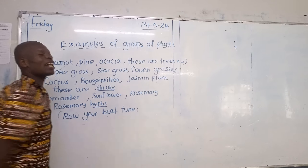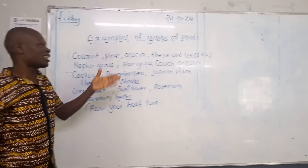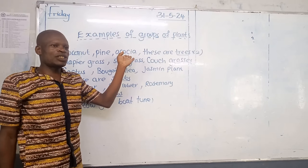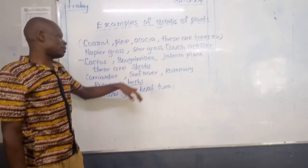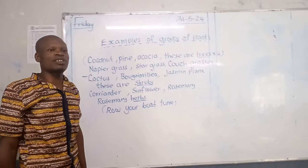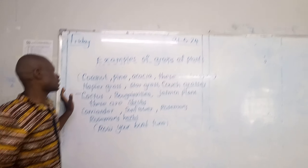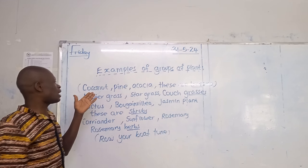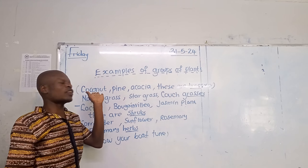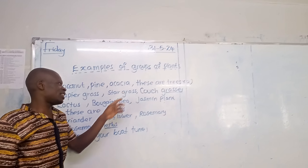Now, trees — these ones — they are higher plants. They have true stems, while shrubs, herbs, and grasses, they don't have true stems, or they do not have stems really. With the trees, we have examples like coconut, thyme, and acacia.